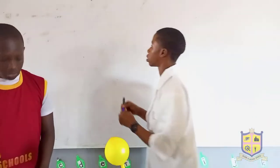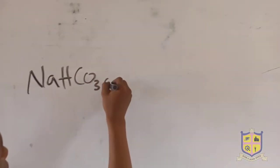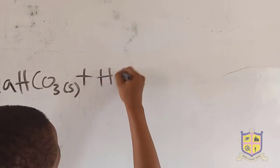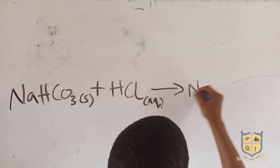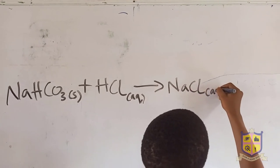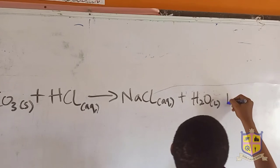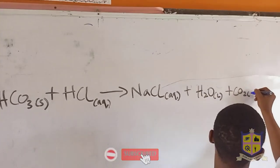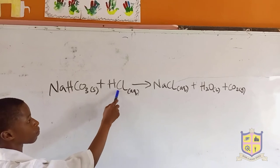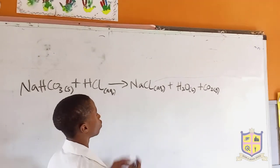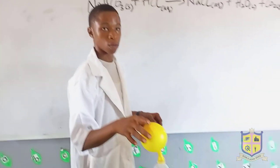So this is the equation for this reaction here. Let's try this. Thank you. Dilute hydrochloric acid will give us sodium chloride and the release of carbon dioxide gas that is trapped inside the balloon to inflate it.